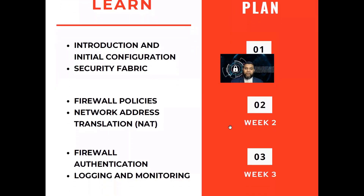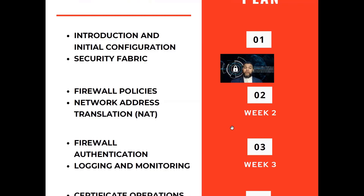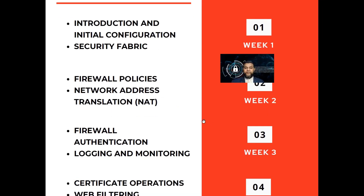In the second week, we'll talk about policies, which is mainly to allow or deny certain access to users. We'll talk about firewall policies, and also network address translation, because most corporates and offices are connected to the internet and need both private and public IP addresses — so you need to do network address translation.